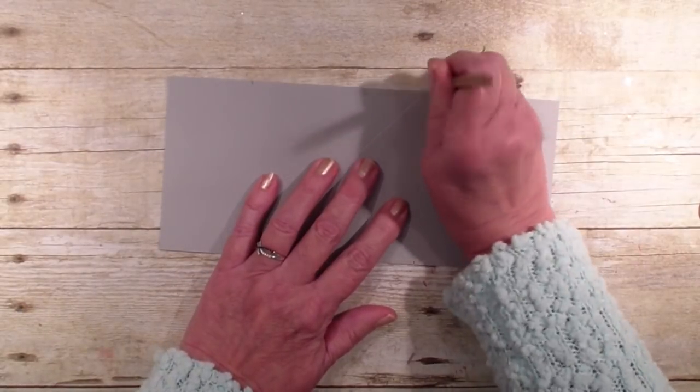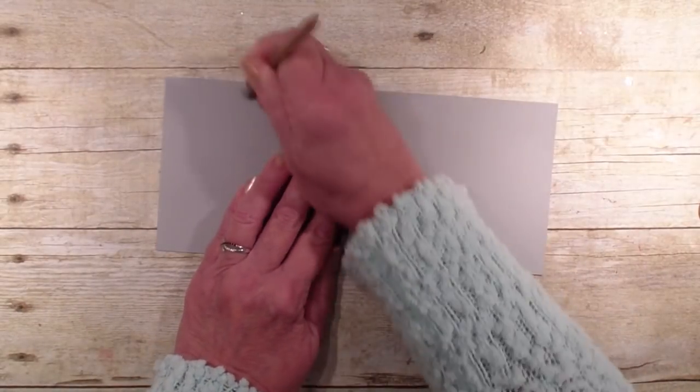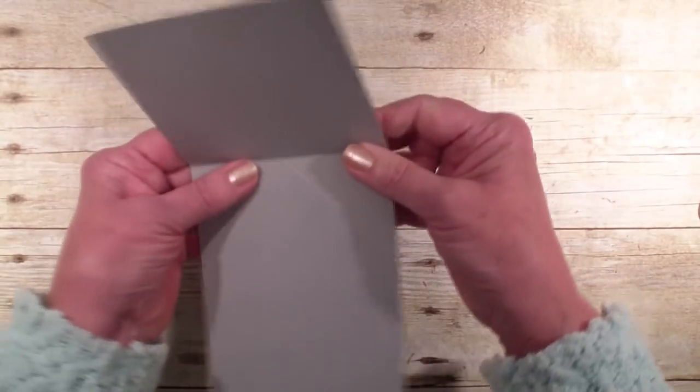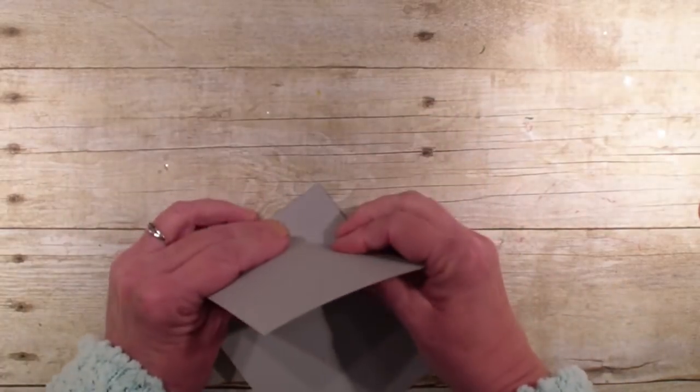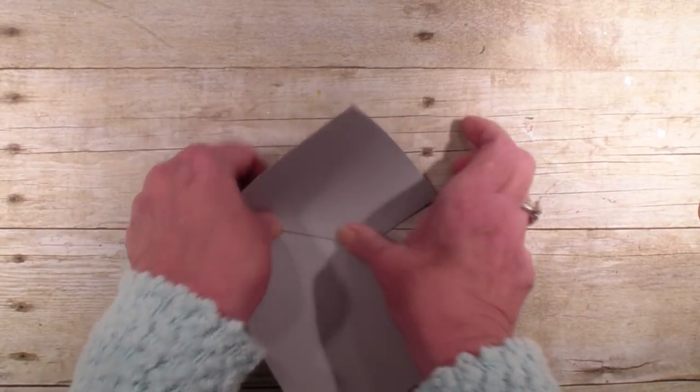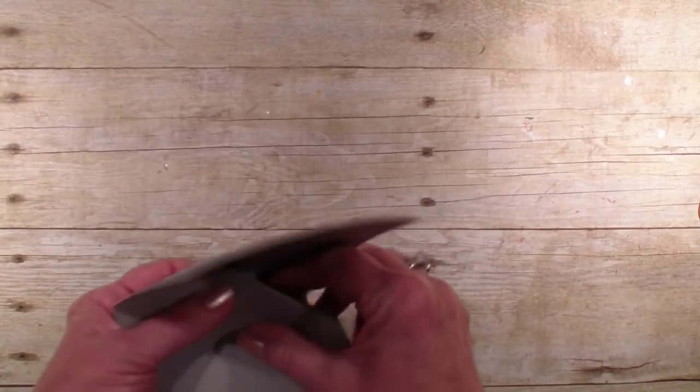I'm going to go ahead and erase those pencil marks, and then we are going to score this in. So what we need to do is just kind of fold this in like so, and burnish the edges, and then we are going to score this in. And then bring in this other side and do the same.